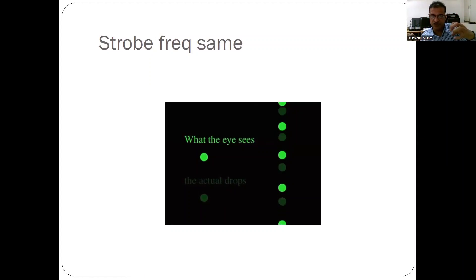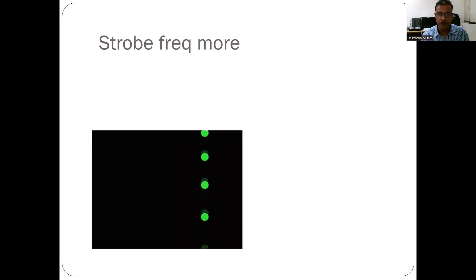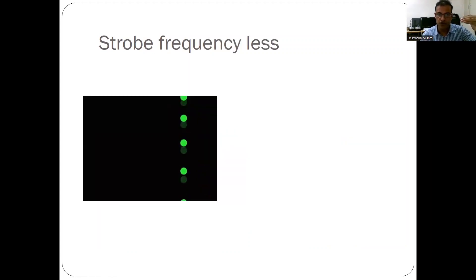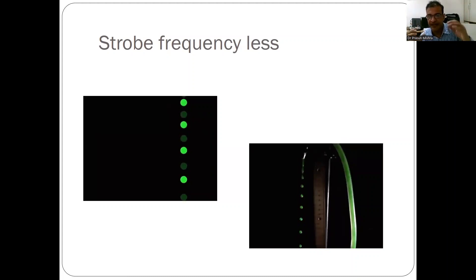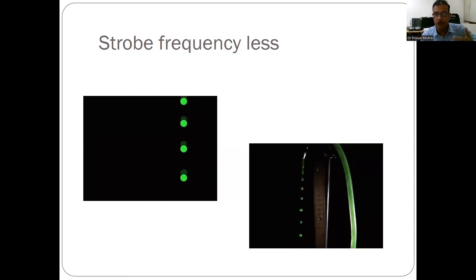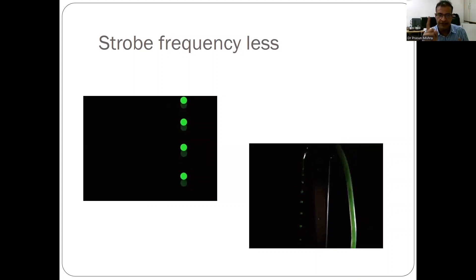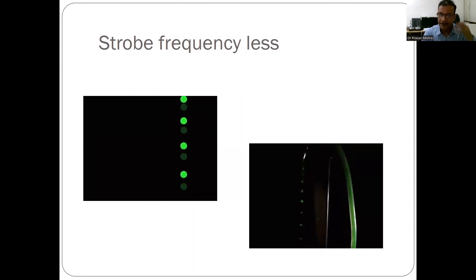When the flickering light matches the speed of the droplets, our eyes perceive one stable drop. When the strobe frequency is higher than the droplet speed, droplets appear to move upward. When the strobe frequency is lower than the droplet frequency, our eyes perceive the droplets coming down in slow motion. Similarly, when a fan moves at a fast rate, we cannot count its blades, but when we shine a strobe light on it, we can see the blades moving slowly.